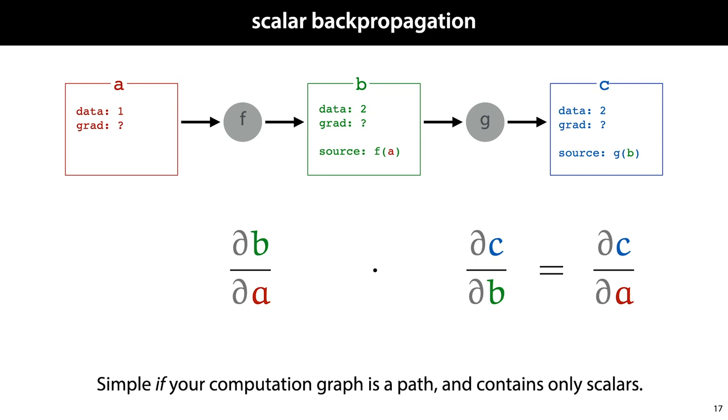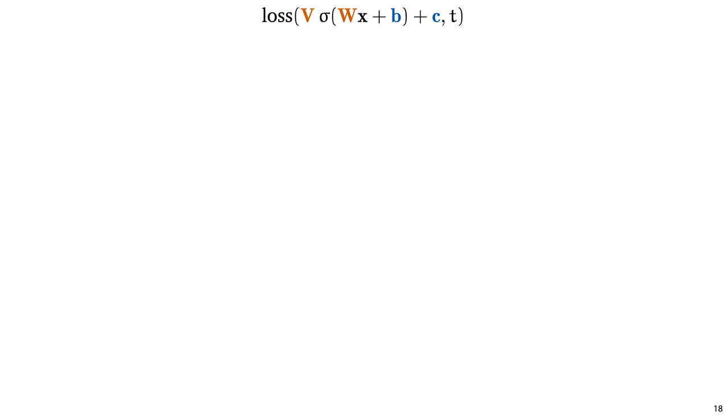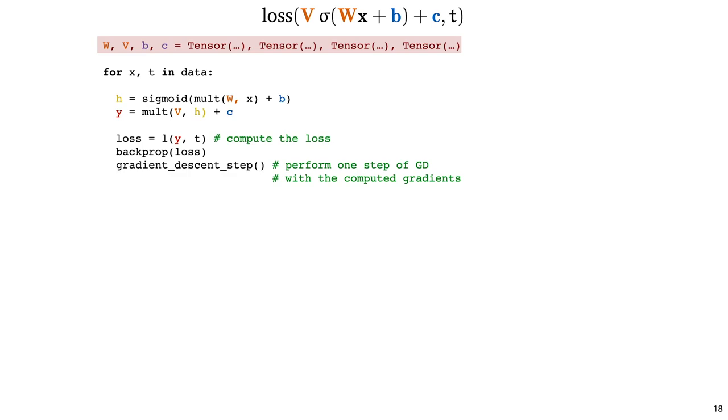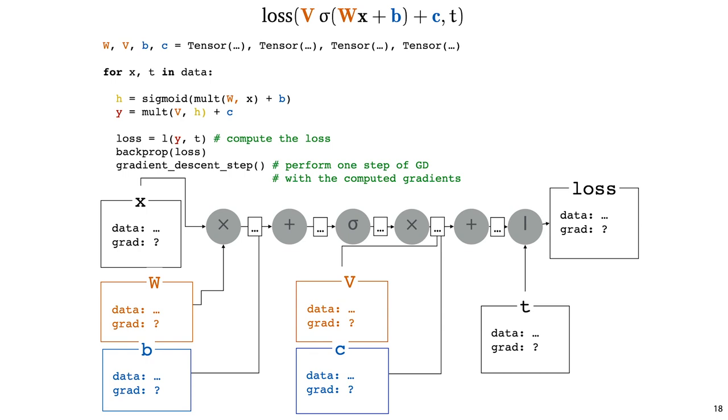In the next video, we'll see what we need to do when the computation graph has a more complicated structure and when the data nodes contain tensors. To look at a more realistic example, here's what a training loop would look like for a simple two-layer feedforward network. We create tensors for our parameters, we loop over the data, and we implement our network in two simple steps, one for the first layer and one for the second layer. We then compute the loss, apply backpropagation to compute the gradients, and then perform one step of gradient descent with the gradients we've just computed. Underwater, our deep learning system remembers the history of this computation in the form of a computation graph, which is then used to execute the backpropagation. Note that in this graph, the nodes contain tensors and the multiplications are matrix multiplications. To translate what we learned in the last lecture about backpropagation to this setting, we'll need some extra insight. And that's what we'll discuss in the next video.